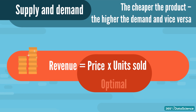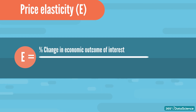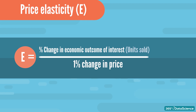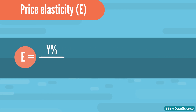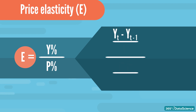How does this look in mathematical terms? Price elasticity is the percentage change of an economic outcome of interest in response to a 1% change in the respective price. Usually, that economic outcome of interest is the number of units sold. Let us denote the economic outcome of interest with Y and price with P. Then, the price elasticity of Y must reflect the percentage change in Y in response to a 1% change in P. We can obtain that by taking the percentage change of Y and dividing it by the percentage change in P. The percentage change of Y is the difference between its present and past value divided by the past value. Similarly, the percentage change of price is the difference between the present and past price divided by the past price.